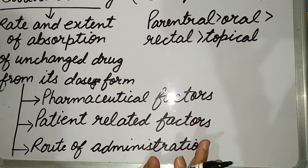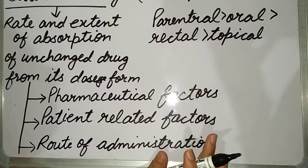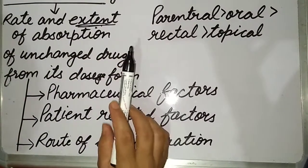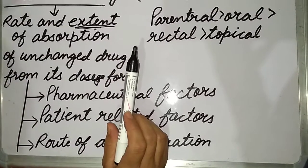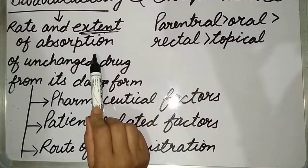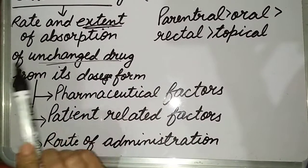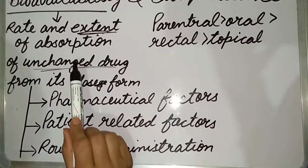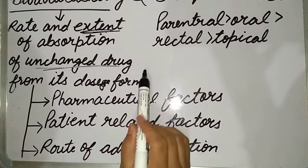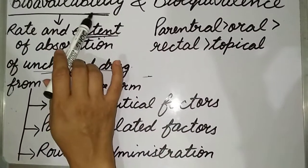What is rate and extent? Rate means at what rate the drug is going into the systemic circulation, and extent is the amount of the drug which is going into the systemic circulation. The most important thing is that it should be the unchanged drug. The rate and extent at which the unchanged drug goes from its dosage form to the systemic circulation is defined as bioavailability.